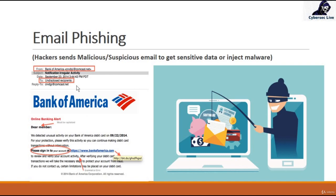You got a mail from Comcast.net and the sender looks genuine — whenever you search it, it shows as a genuine email. But check this: the email address displayed in the mail looks legitimate, however the actual URL is different. It is redirecting to some other destination entirely.